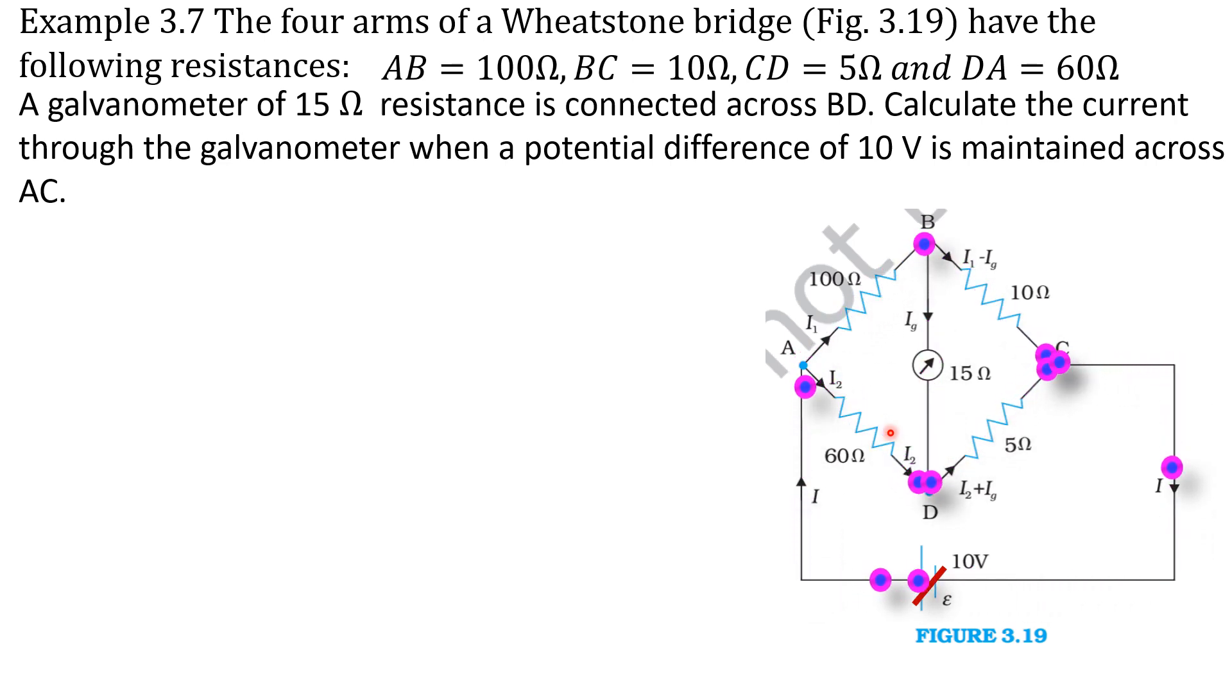First we consider this BDAB loop. Here we have to apply Kirchhoff's second rule, that is voltage rule. Here the loop direction and the current directions are same. Here also the loop direction and current directions are same. But in this case, this is a loop direction but current direction is in this way. So both are opposite direction. So we have to give negative sign in this case.